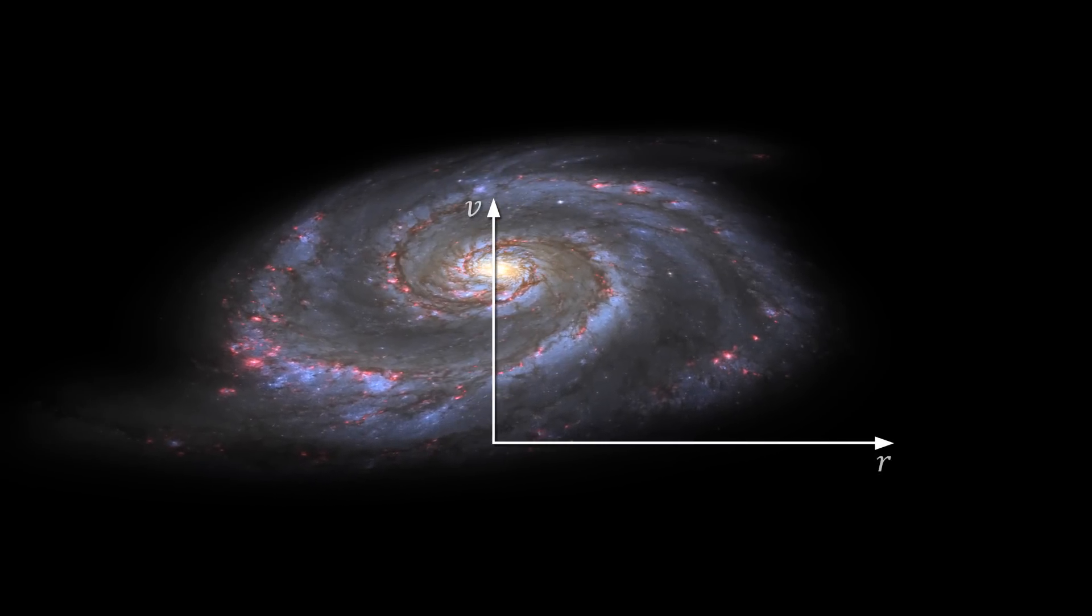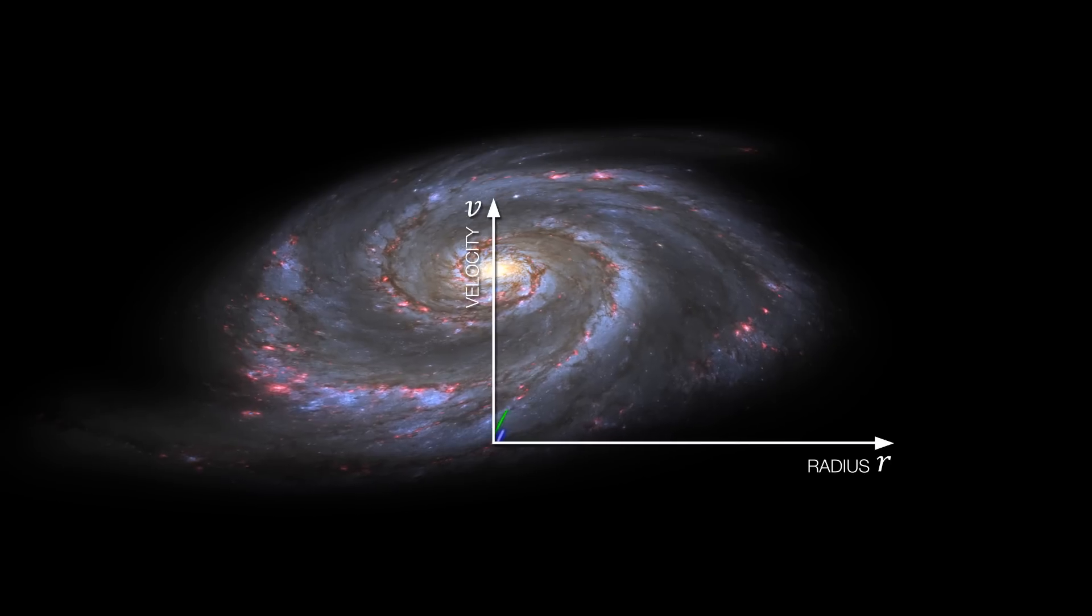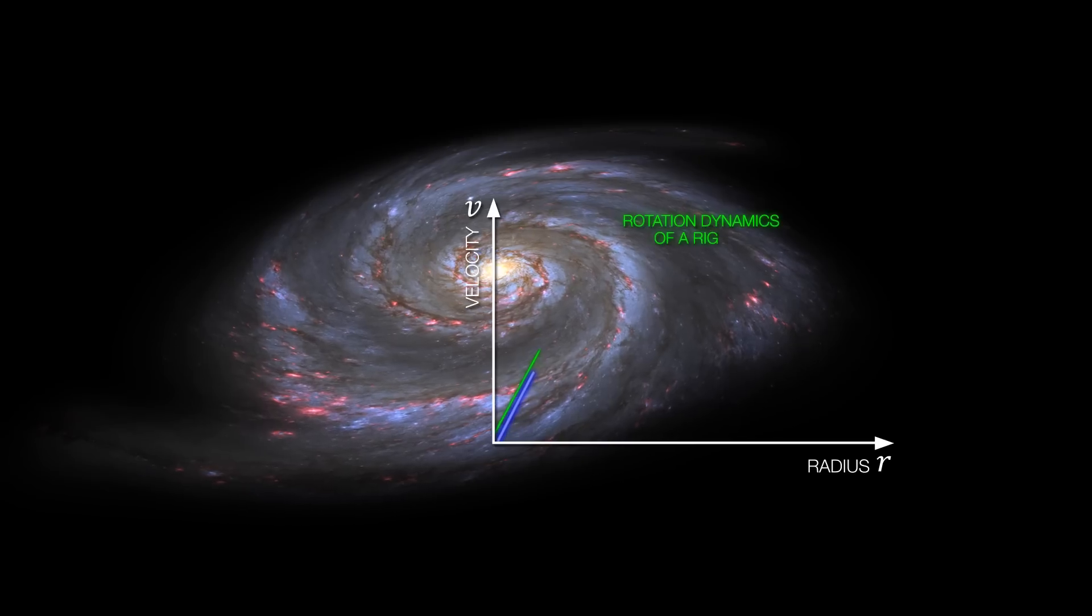Close to the center of the galaxy, the rotational velocity of the galaxy behaves due to the high star density like a rotating rigid body, just like our spinning top.